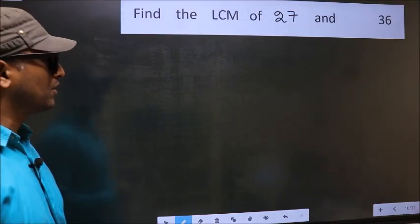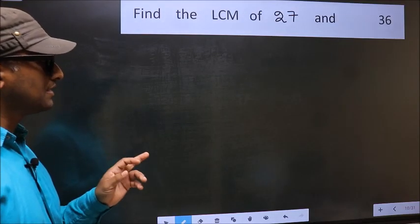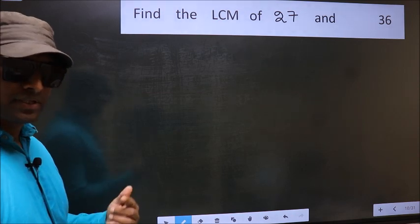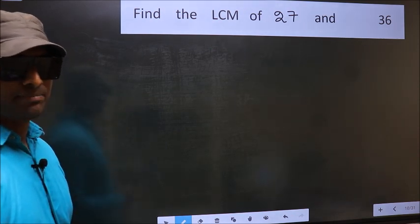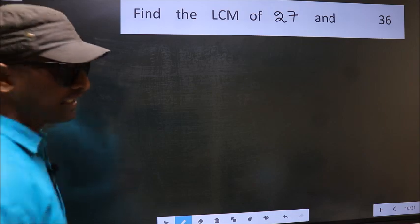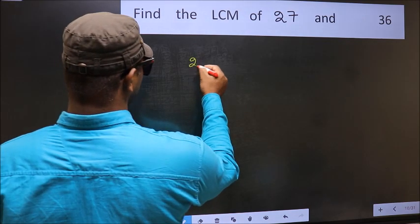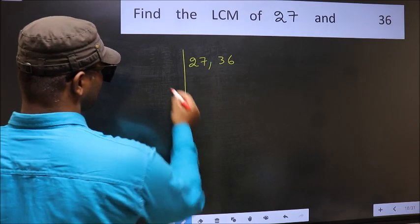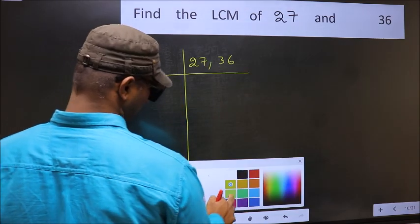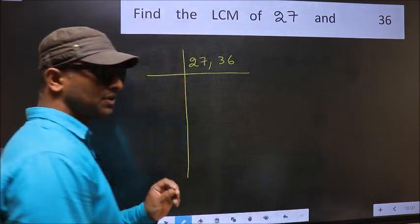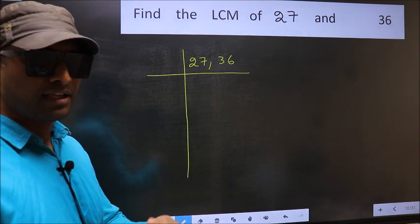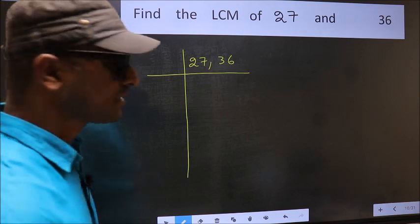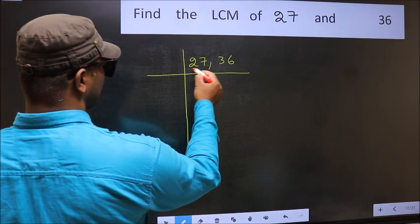Find the LCM of 27 and 36. To find the LCM, we should frame it in this way: write 27 and 36. This is your step 1. Now you should focus on the first number, which is 27 here.